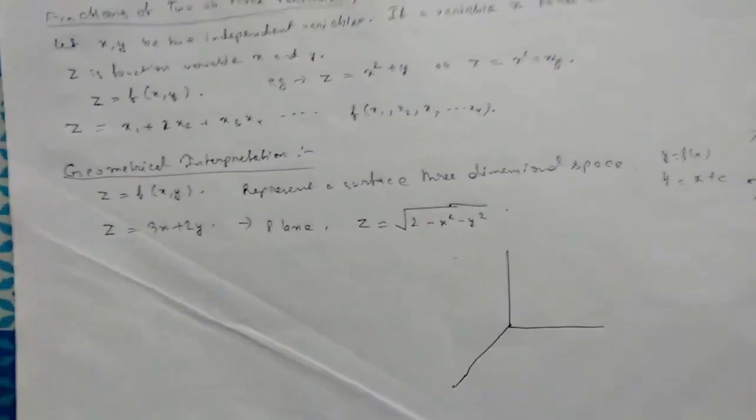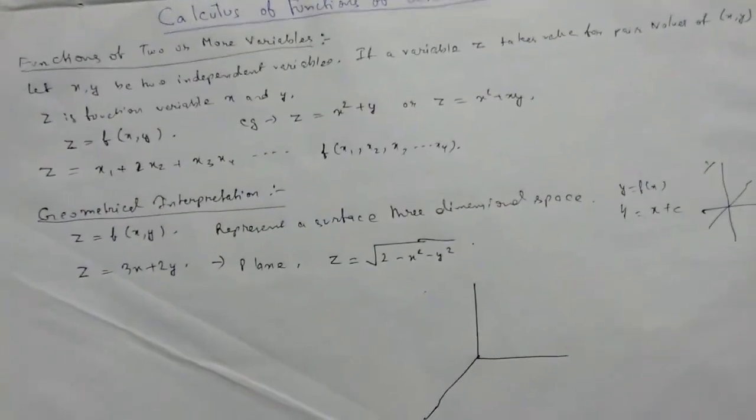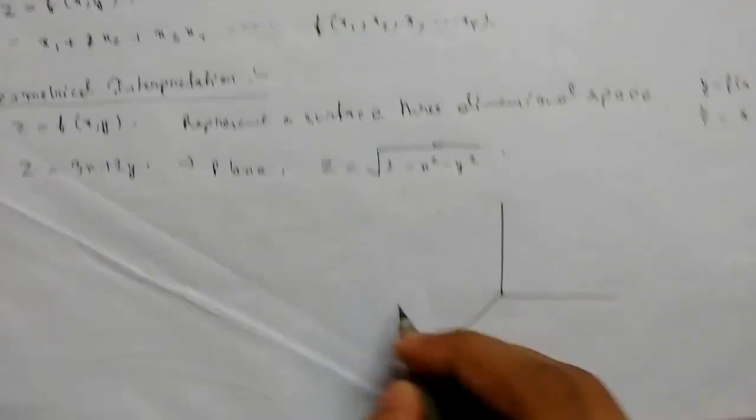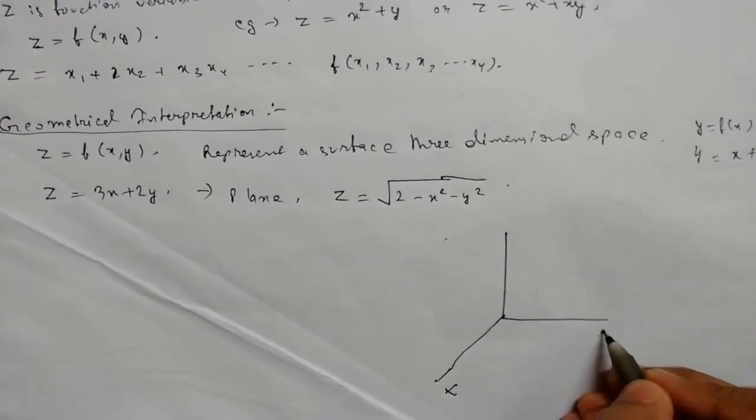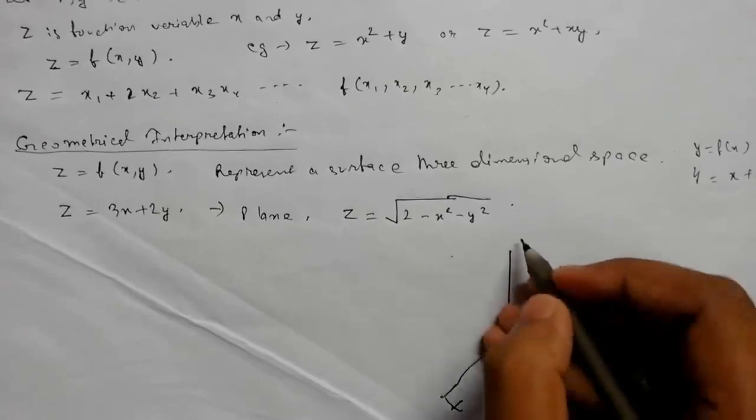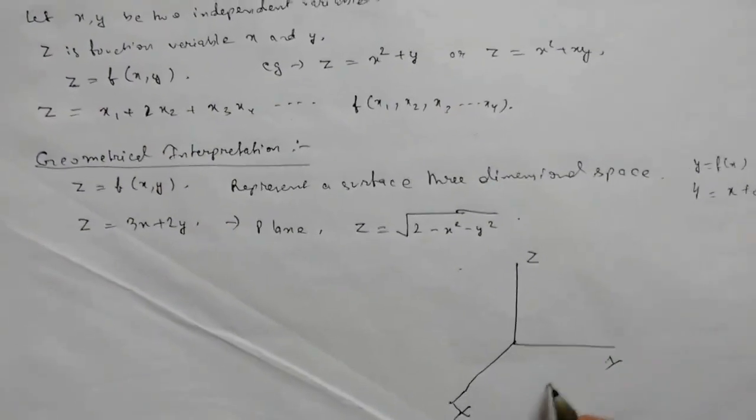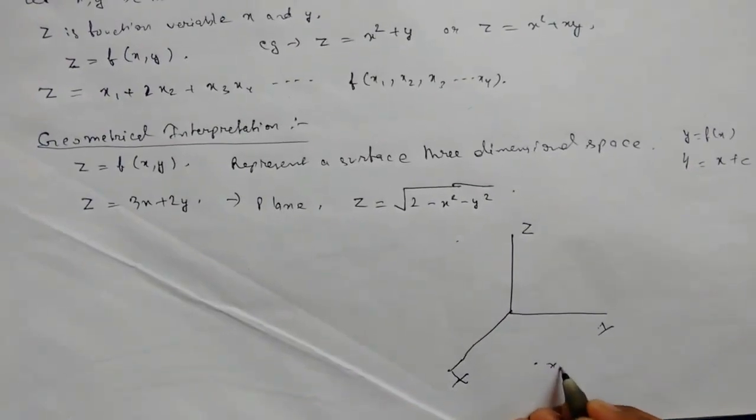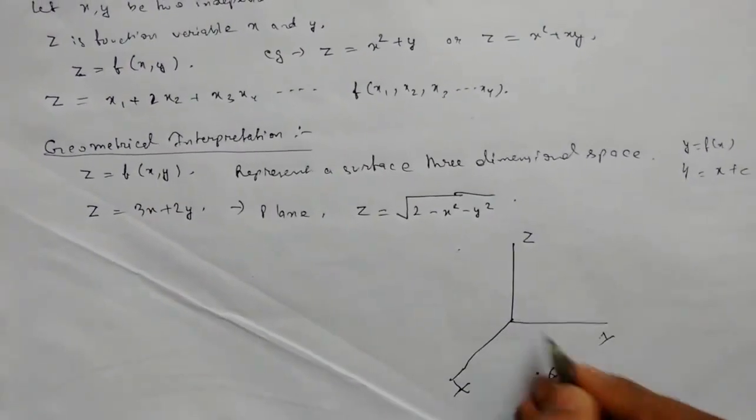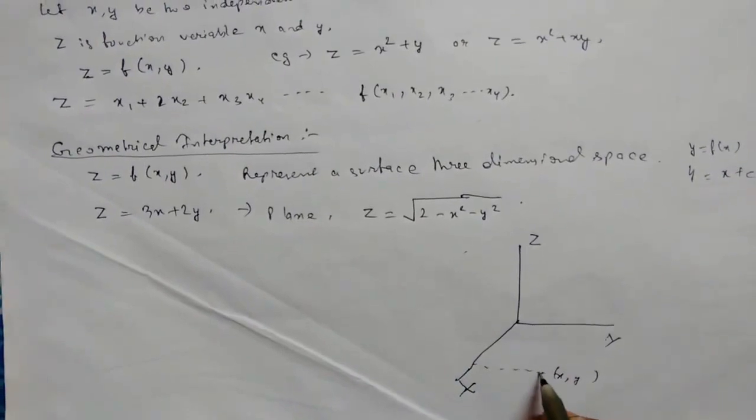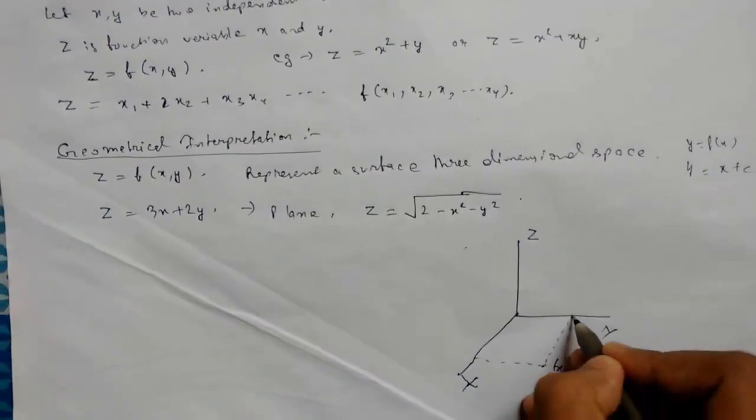So suppose we have a general coordinate axis like this. Suppose we have this as x, this is y, and this is z. So for a point, suppose x comma y in this plane.